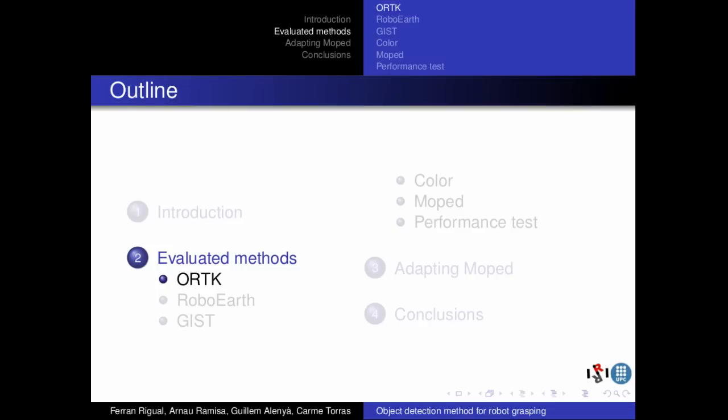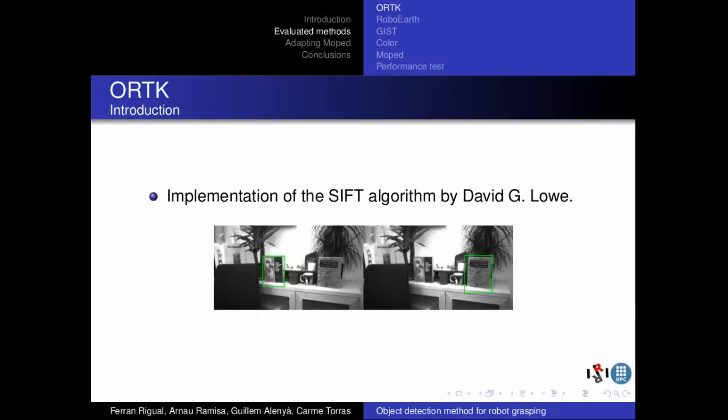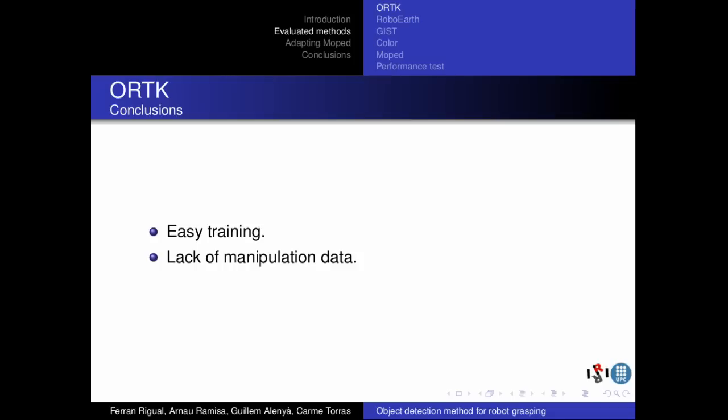The first evaluated method is ORTK, which stands for Object Recognition Toolkit. It was the first method to be reviewed because its implementation follows the indication of the original author of SIFT. SIFT is a well-known technique in the field of computer vision used in some of the next methods reviewed in this project. ORTK has an easy training that allows the method to start detecting and recognizing the objects even if only some pictures are provided. However, the results lack manipulation data and therefore the robot cannot localize or grasp the object in its environment.